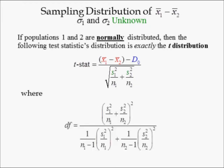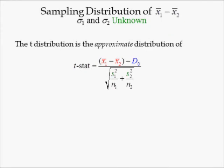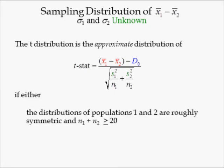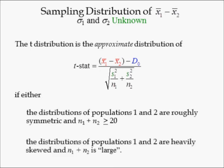In chapter 9, the degrees of freedom of the t-stat were equal to the sample size minus 1. This is not the case in chapter 10 because there are two populations. The degrees of freedom are approximately equal to n1 plus n2 minus 2 when the sample sizes and sample standard deviations are identical. Since this is rare, we use a specific equation to compute the degrees of freedom. The t-distribution is the approximate distribution of t-stat if the distributions of populations 1 and 2 are roughly symmetric and the sum of sample sizes is at least 20, or if the distributions are heavily skewed and the sum of sample sizes is large.